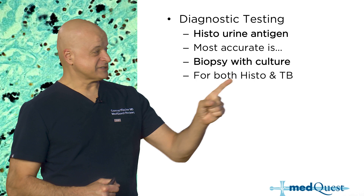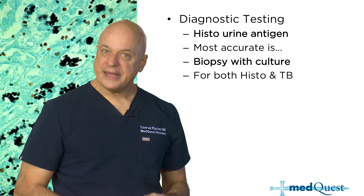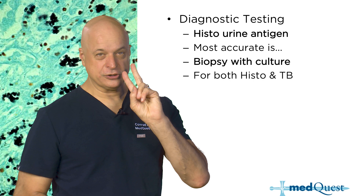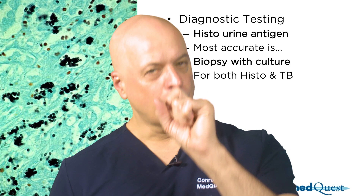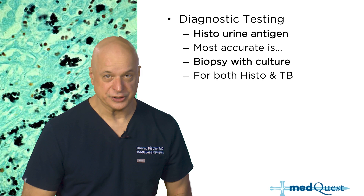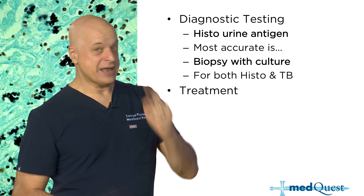For TB, fortunately it sheds in sputum. Histo doesn't shed in sputum very well. In fact, all the dimorphic fungi — histoplasmosis, blastomycosis, cryptococcosis, coccidioidomycosis — all primarily enter the body through the lung, but they're not well detected inside sputum. That's why TB can be detected from expectorated sputum, but not histoplasmosis.